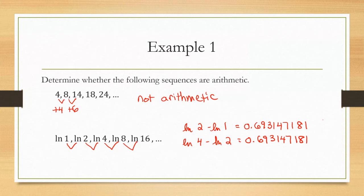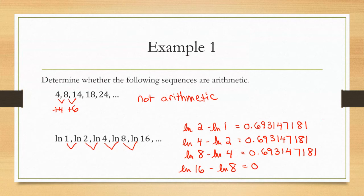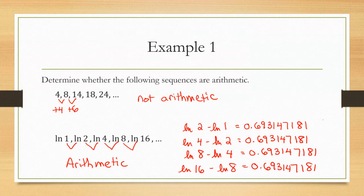We double-check all the pairs, including ln(16) minus ln(8), and the decimal is exactly the same each time. So while it may not look obviously arithmetic, it is an arithmetic sequence — because when you find those differences you do get the same value each time.